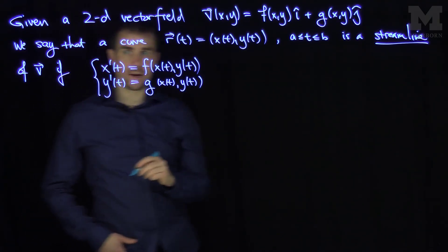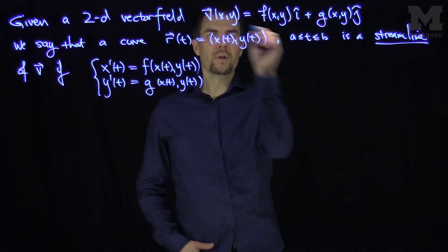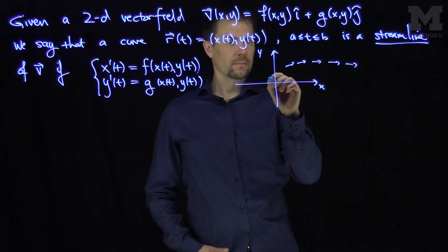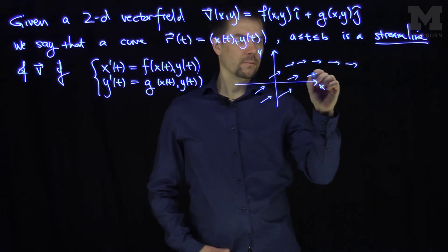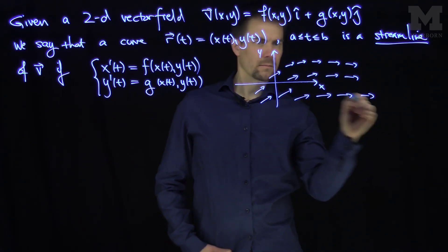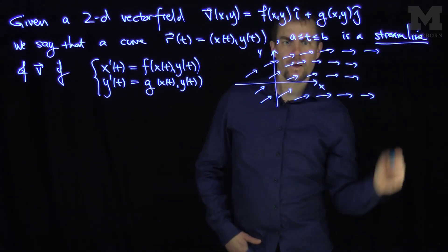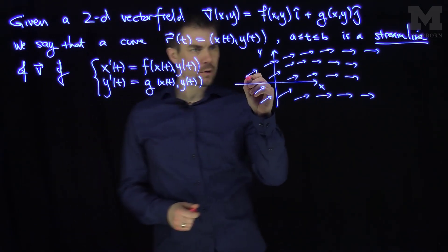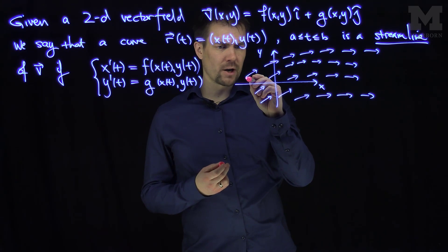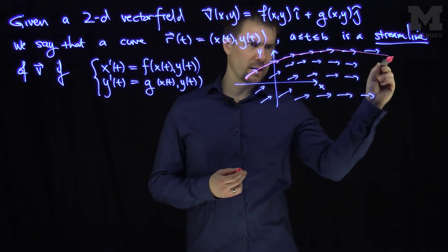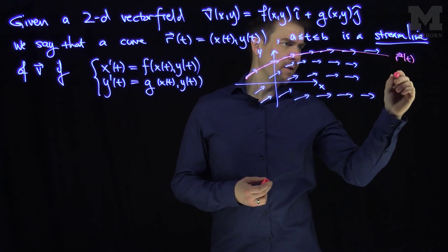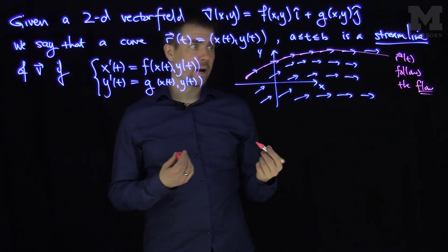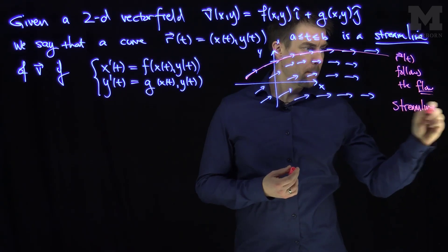This analytic condition might not make sense immediately, but geometrically it's clearer. If we plot the vector field in the x-y plane with a bunch of vectors, we get a good sense of what a trajectory looks like. If we place a particle into the vector field, it follows the arrows — going like this, like this, like this — tracing out a curve r of t that follows the flow. That curve is what we call a streamline.